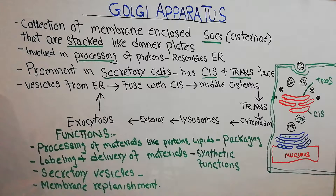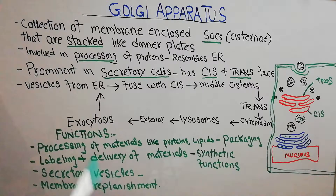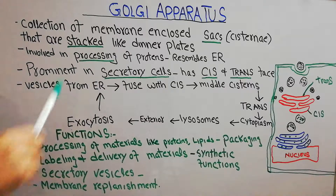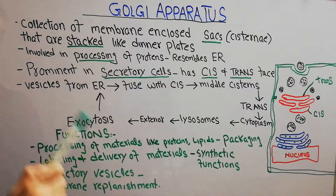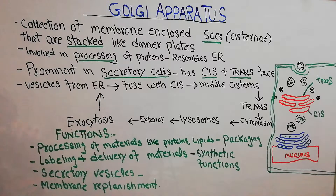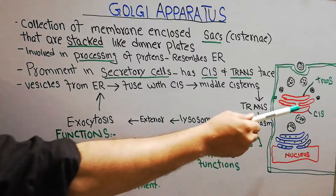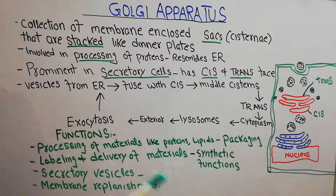Golgi apparatus is an organelle surrounded by a cell membrane. Like mitochondria, nucleus, endoplasmic reticulum, and lysosomes, Golgi apparatus is also surrounded by a double lipid bilayer membrane. It has a lot of stacks which are connected with each other through microtubules.